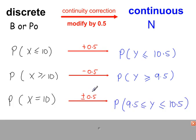For equals to, you add a half and you subtract a half, so 9.5 to 10.5. So after the continuity correction, this is the probability that you would work out.